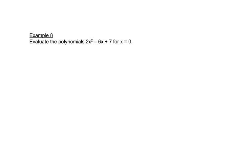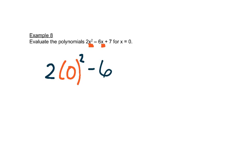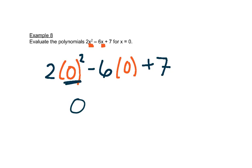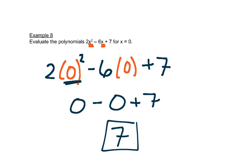This problem asks us to evaluate the polynomial for x equals 0. Remember that just means we're going to substitute 0 in place of x every time we have an x. So we have 2 times 0 squared minus 6 times 0 plus 7. Order of operations says we do 0 times 0 first, which is 0, then times 2 is still 0. And 6 times 0 is 0. So we end up with just 7.